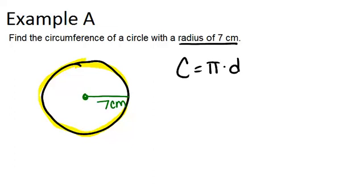The diameter of a circle is the distance all the way across, so it's twice the length of the radius. That means that the diameter of this circle would be 14 centimeters long.